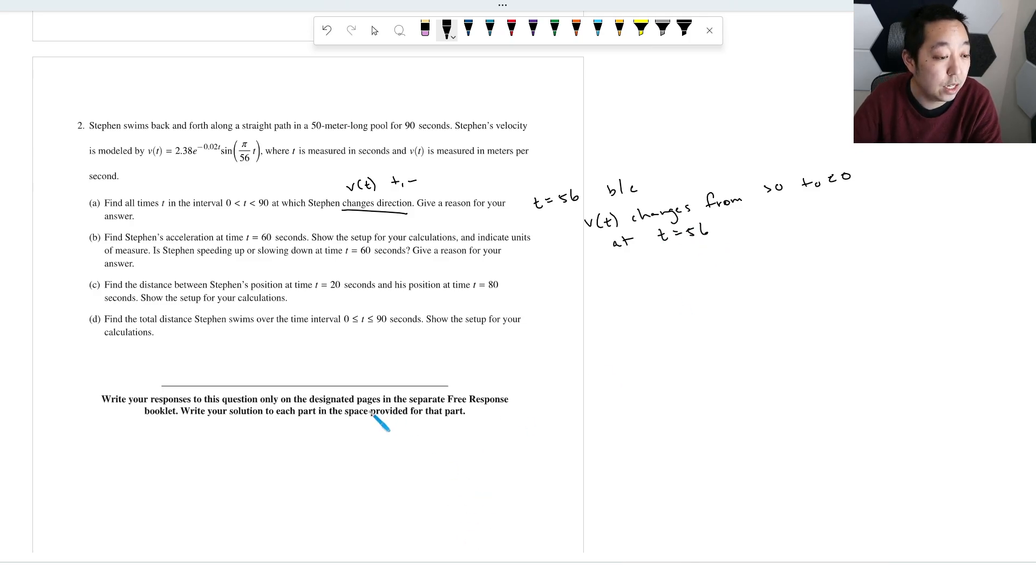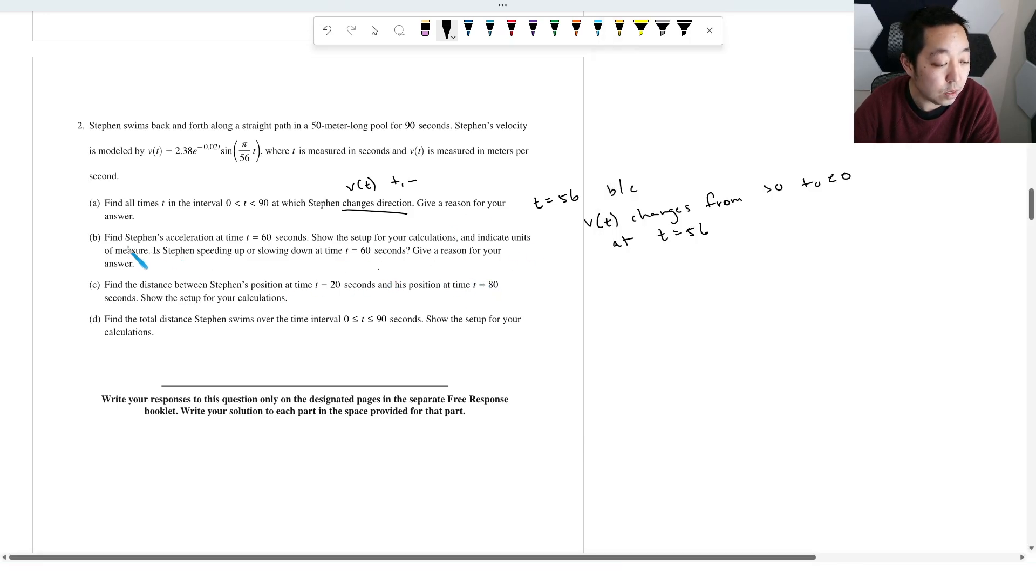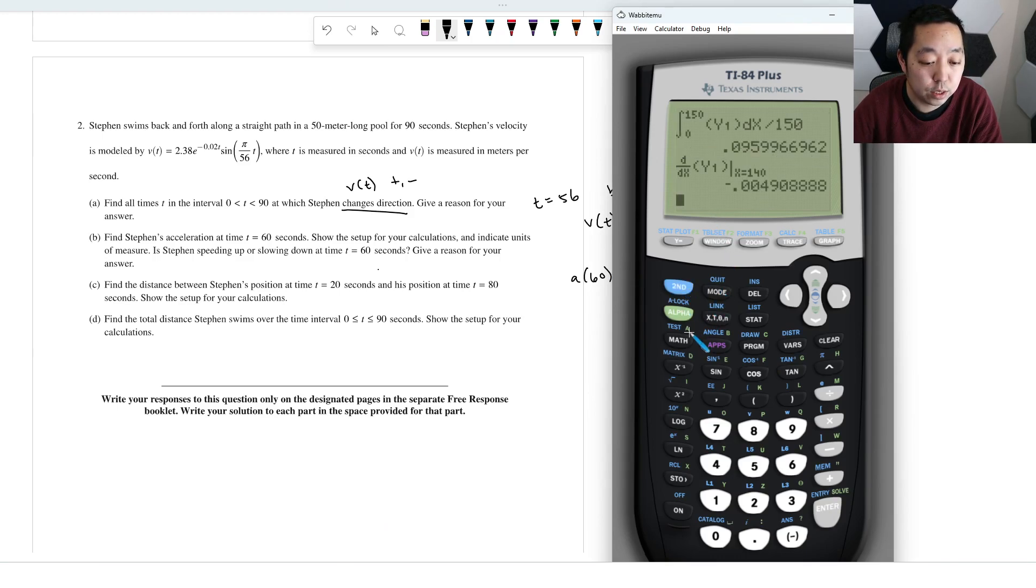And then is there any other time that it occurs? It does not appear so in that interval from 0 to 90. Find the acceleration at t equals 60 seconds. Show the setup for your calculations. Indicate units of measures. Is it even speeding up or slowing down? So we would like to know what the acceleration at 60, which is really the derivative at 60. So we just want to compute the derivative of the velocity. And that's where we're going to use a calculator and continue to use the function we entered.